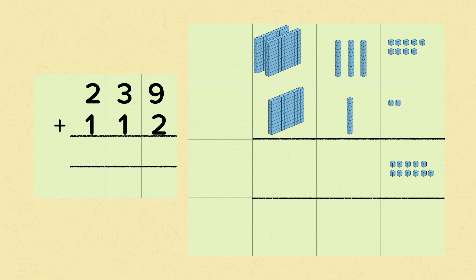Nine add two is eleven. But we know that eleven is made up of one ten and one one. We can't have a ten in the ones column, so we move it across. Then we only have one one, and we've got the one ten that we've exchanged.